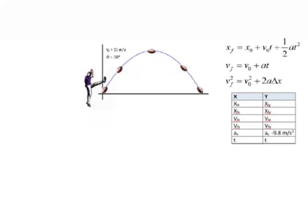Today we want to take another look at projectile motion problems, or kinematics in two dimensions. Today's problem involves a football or soccer player who kicks a ball starting at the ground position, goes up into the air, and then lands at the ground position again. We would like to know the range, or the final position in the x direction, for our football.